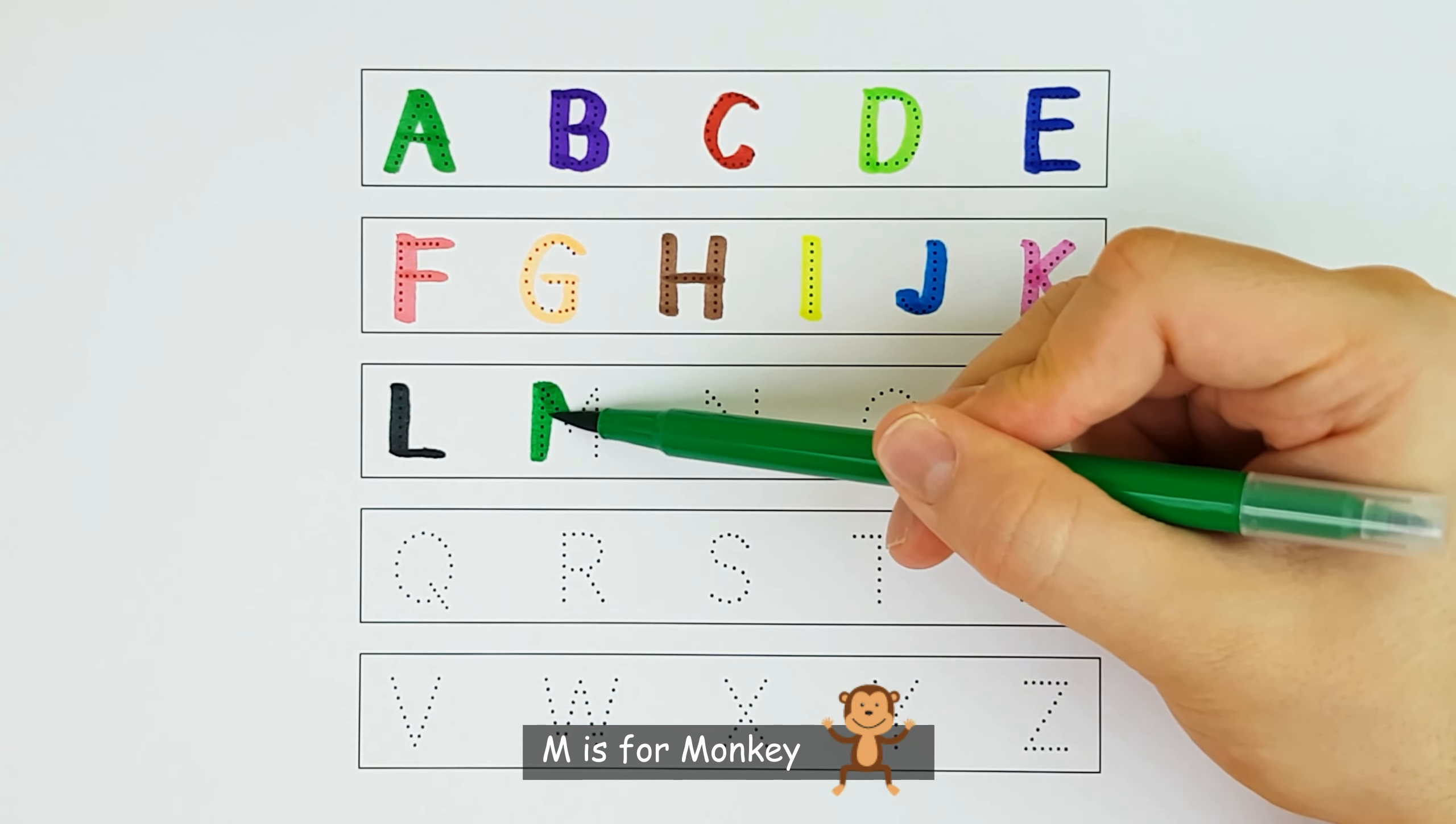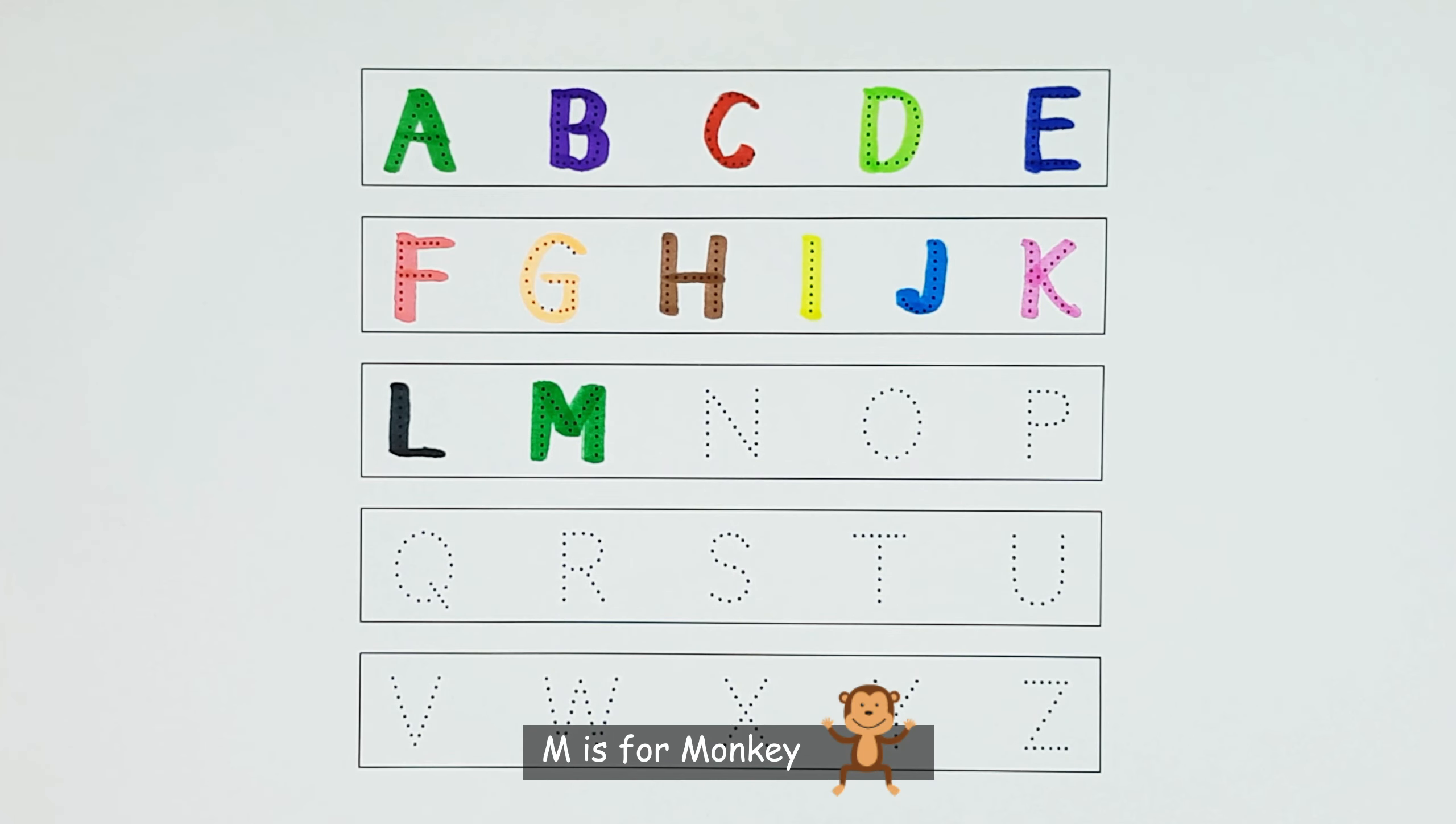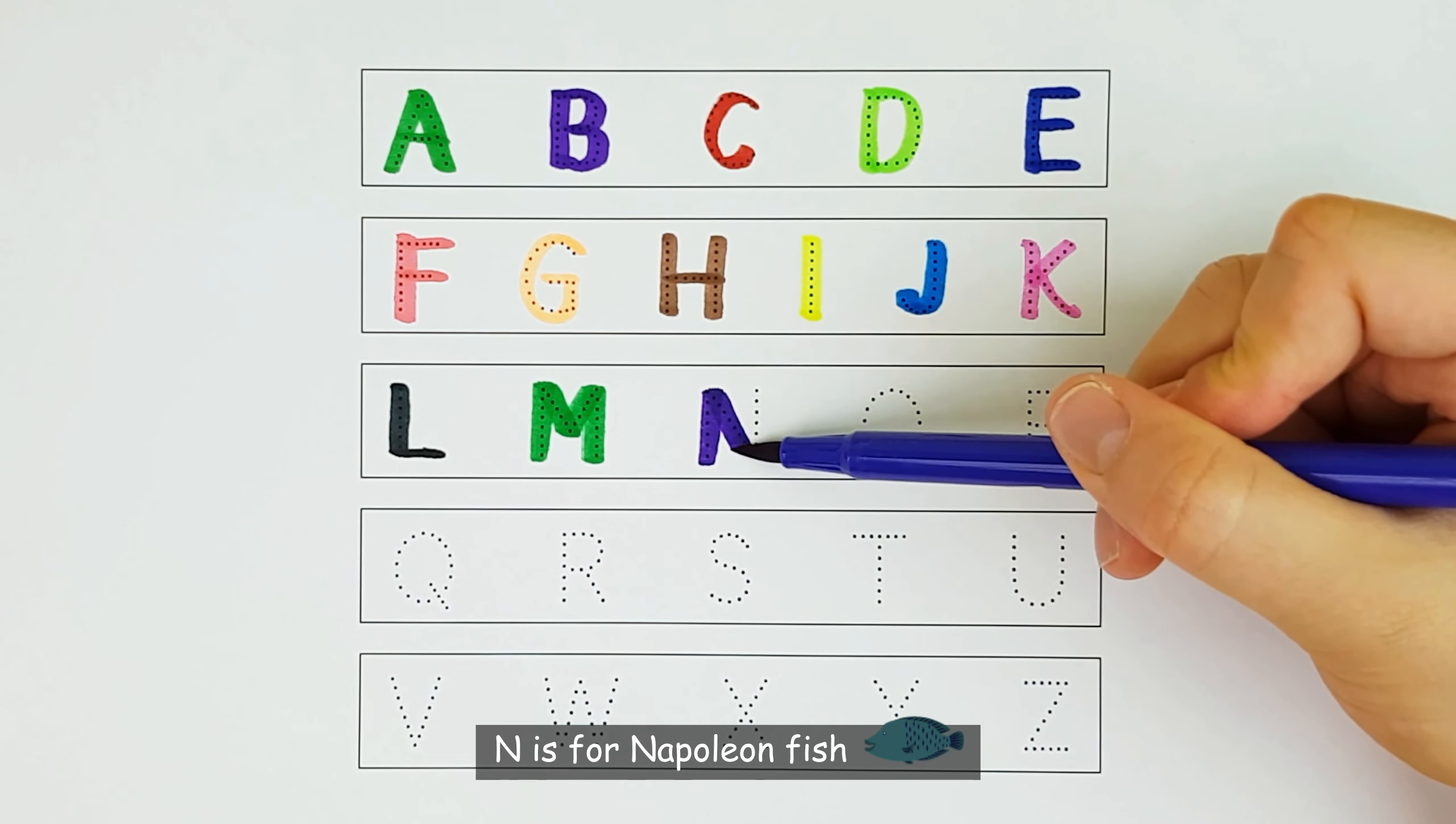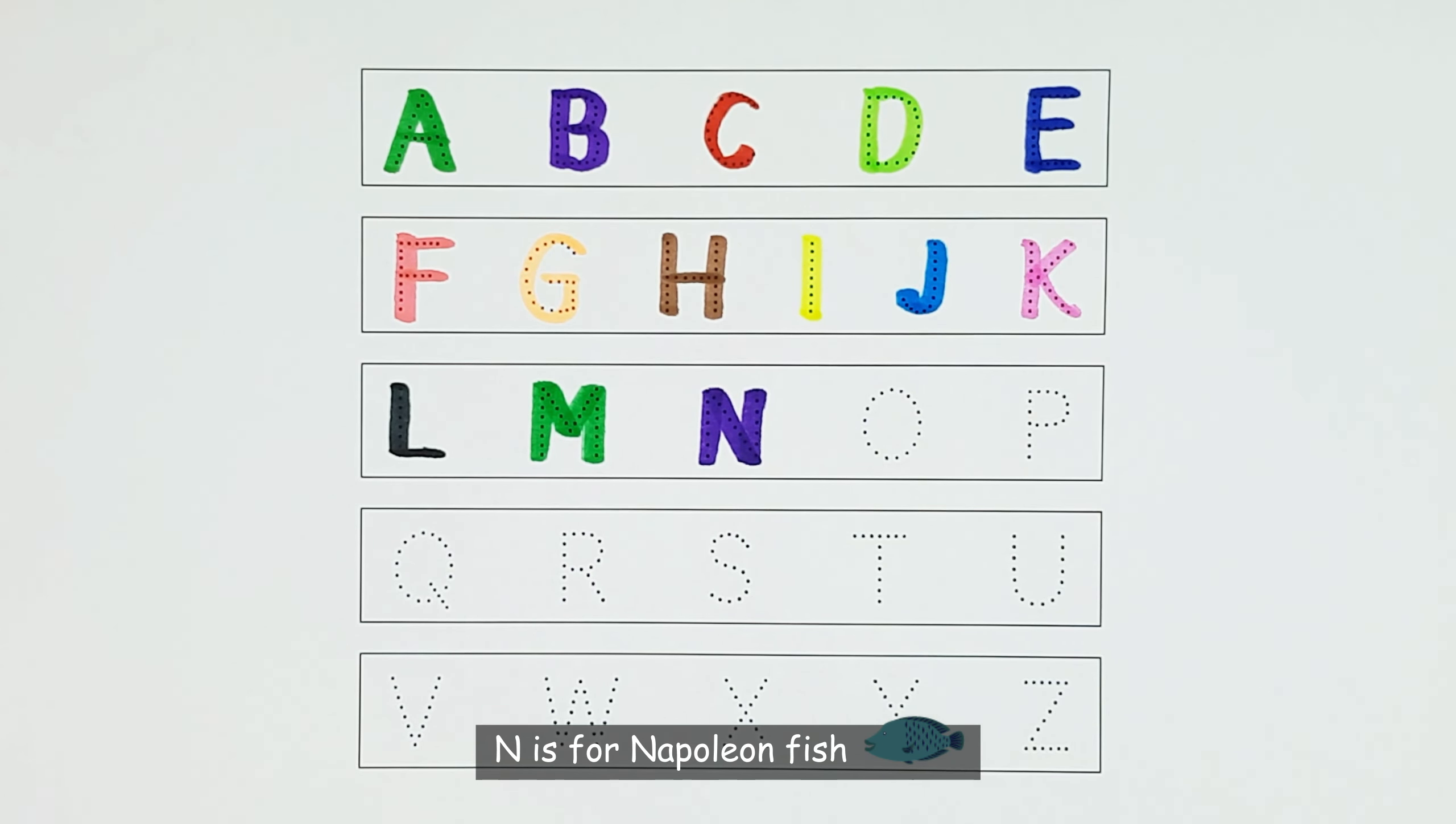M. M is for Monkey. M. N. N is for Napoleon Fish. N.